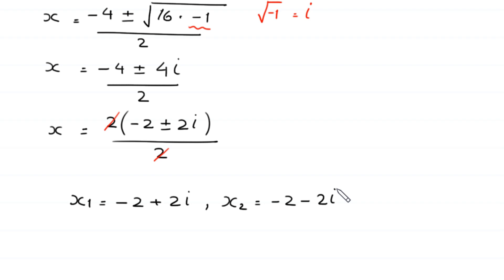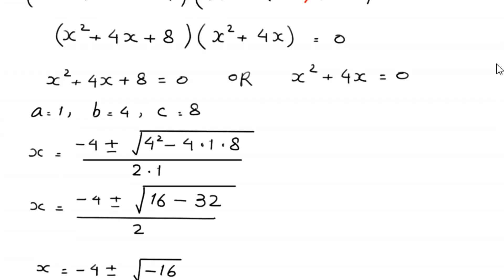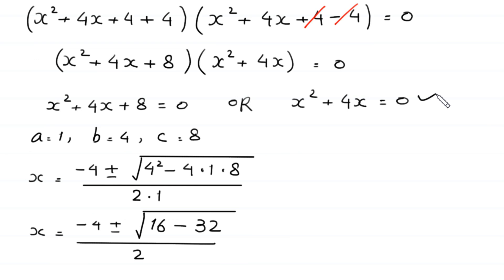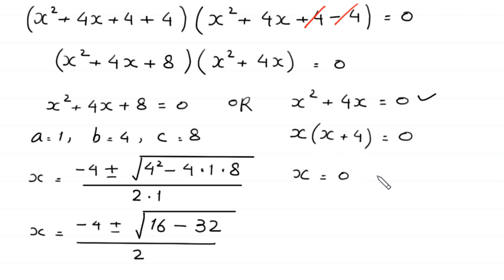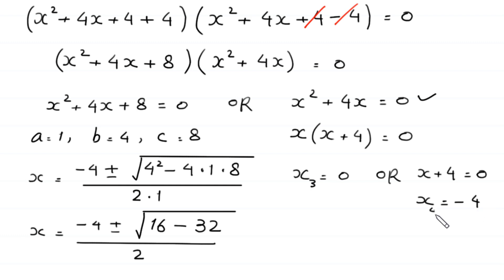To find the other two values of x, we solve x² + 4x = 0. We factor out x as a common factor, giving x(x + 4) = 0. From here, either x = 0 or x + 4 = 0, so x = −4. Therefore x₃ = 0 and x₄ = −4.